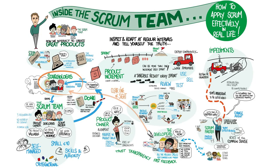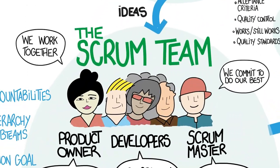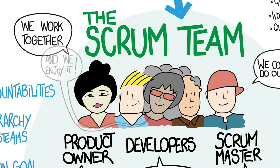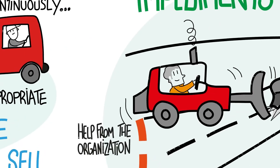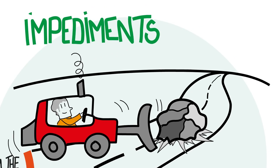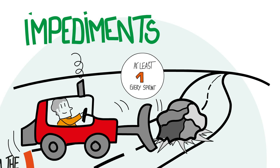A Scrum team is a happy team. If your team is not happy doing Scrum, that is a warning sign that something is amiss. The goal is not to cram more work into each sprint — the goal is to produce more value sooner. Listen to your team and address at least one concern every sprint.